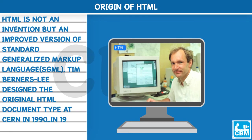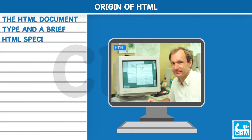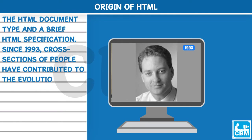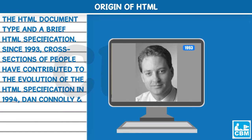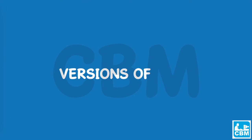In 1992, Dan Connolly wrote the HTML document type and a brief HTML specification. Since 1993, cross-sections of people have contributed to the evolution of the HTML specification. In 1994, Dan Connolly and Karen Olson-Mulrow rewrote the HTML specification.